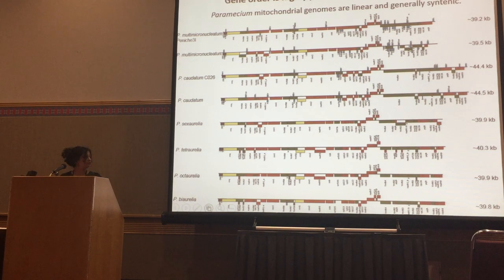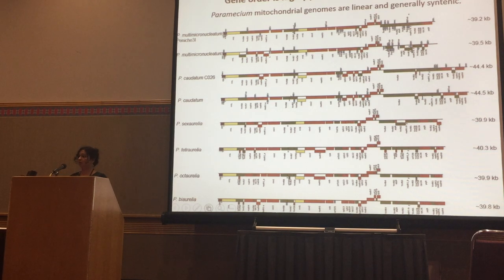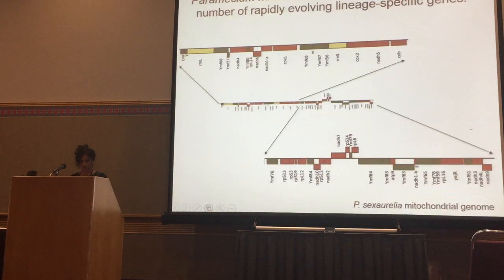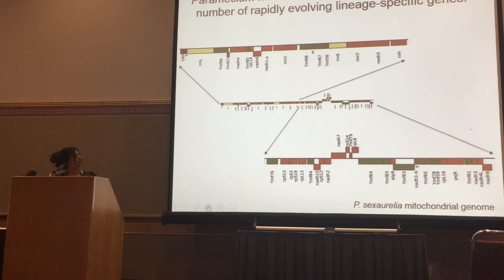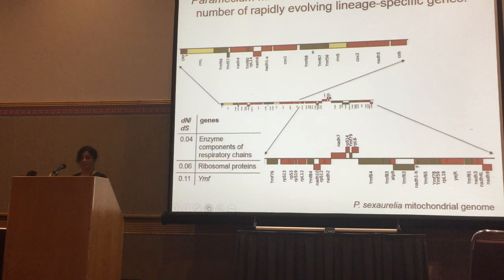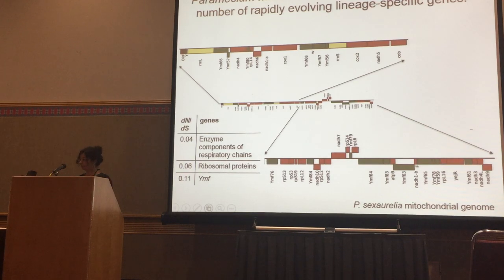One of the unique features of these genomes is about 16 lineage-specific genes that have no known homologues in any of the other eukaryotic mitochondrial genes. This is the Paramecium sexaurelia genome, and all the green regions show those lineage-specific genes, which also happen to be very rapidly evolving, as can be seen by the dN/dS values in comparison to the other protein-coding genes and ribosomal genes.